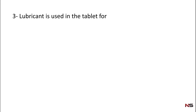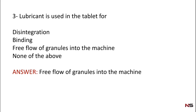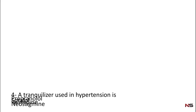The third question: lubricant is used in the tablet for which purpose? Options are: disintegration, binding, free flow of granules into the machine, or none of the above. The correct answer is free flow of granules into the machine. Lubricant is used in tablet manufacturing for the free flow of granules into the machine.